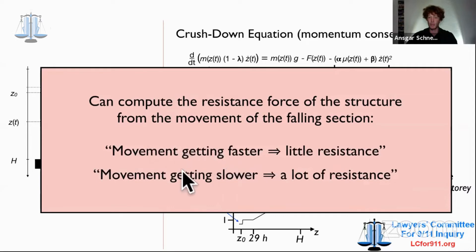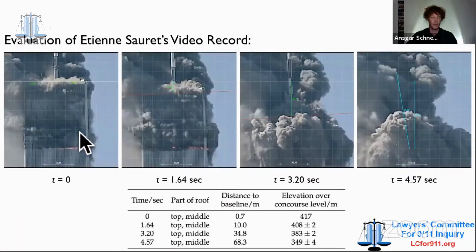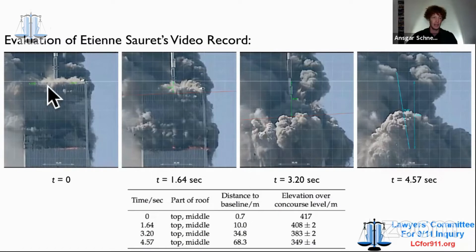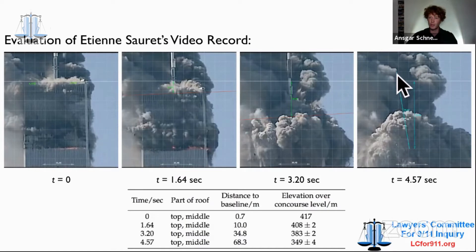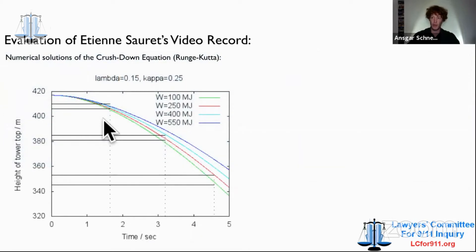Here are four stills from a video taken from the north side of the building at four distinct times. Here you can see I tracked the roof line. In this fourth picture, you see this blue line keeping track of the antenna — if the blue line were not here, you could see the last bit of the antenna before it disappears behind the dust cloud. You can still determine the position of the roof line, and you can evaluate this to get certain numbers for the elevation of the roof line, then couple this with the mathematical model I earlier wrote down.